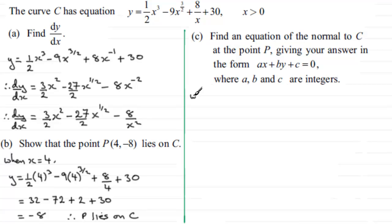When x = 4, dy/dx = (3/2)(4²) - (27/2)(4^(1/2)) - 8/(4²). That's (3/2)(16) - (27/2)(2) - 8/16.